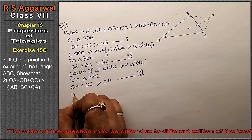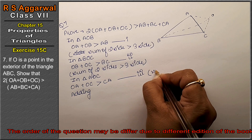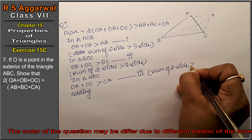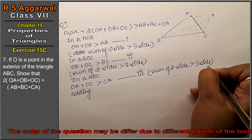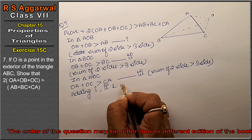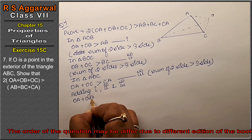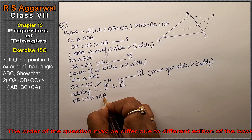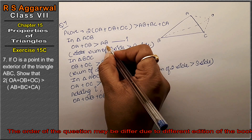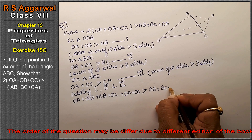Now we will add all three equations. The left-hand side becomes OA plus OB plus OB plus OC plus OA plus OC, and the right-hand side is AB plus BC plus CA.